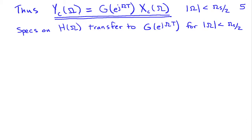Under the conditions that the sampling theorem is satisfied and we have ideal reconstruction, the output spectrum Yc(Ω) equals G(e^jΩT) times Xc(Ω). This relationship holds for frequencies less than half the sampling frequency, so the continuous-time filter specifications transfer directly to the discrete-time filter within that band.